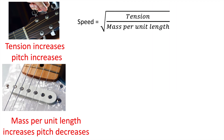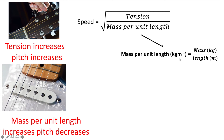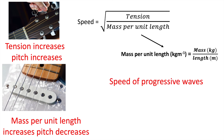The equation for the speed of progressive waves is v = √(T/μ), the square root of tension divided by mass per unit length. Increasing tension increases speed; increasing mass per unit length decreases speed, because it's an inverse relationship. Mass per unit length is calculated by dividing the mass of the string by its length, measured in kilograms per metre, and is given the symbol mu (μ).